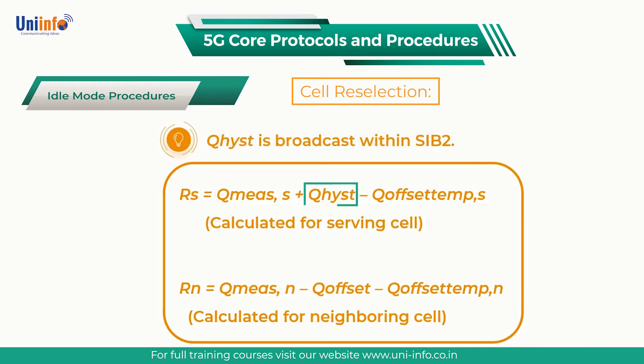Q-Hist is broadcast within SIB2. In the case of intra-frequency neighbouring cells, Q-Offset is defined by Q-Offset Cell broadcast within SIB3. In the case of inter-frequency neighbouring cells, Q-Offset is defined as the sum of Q-Offset Cell and Q-Offset Frequency broadcast within SIB4.